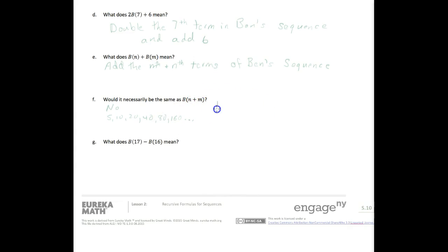Now let's say let n equal 1 and m equal 3. That means b(n), which would be b(1), is 5. And b(m), the mth position would be b(3), and b(3) is 20.